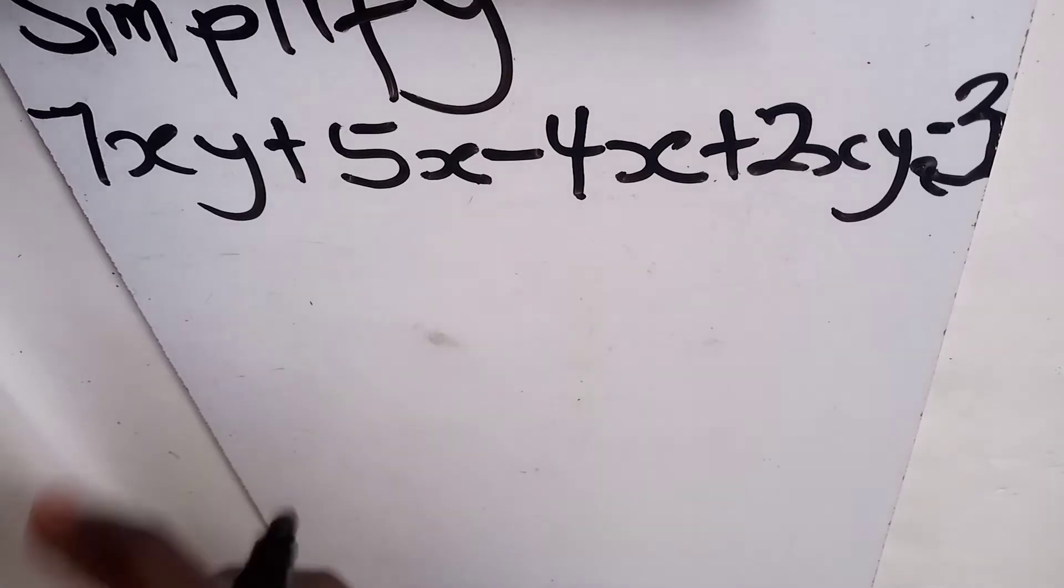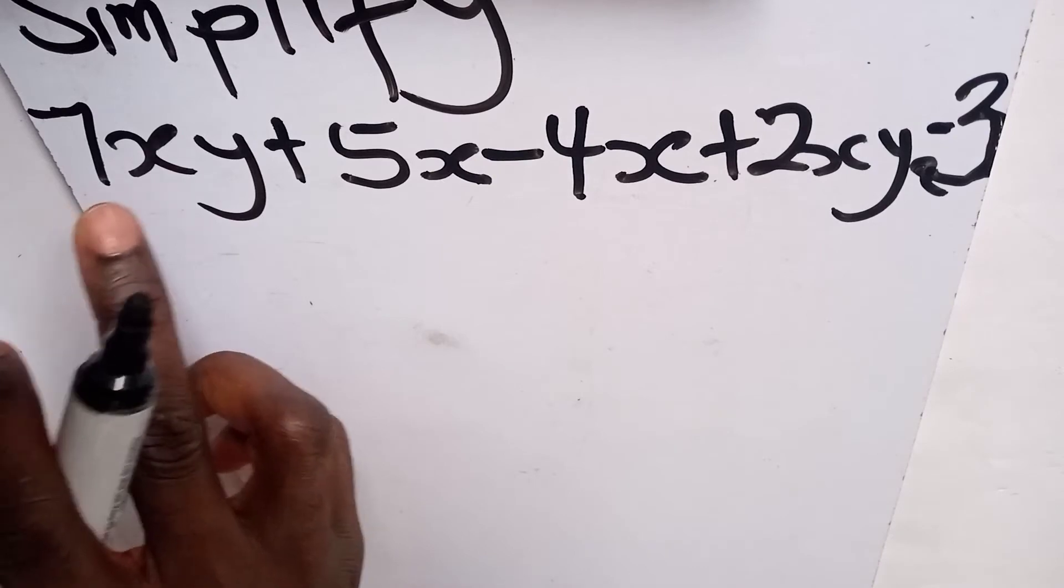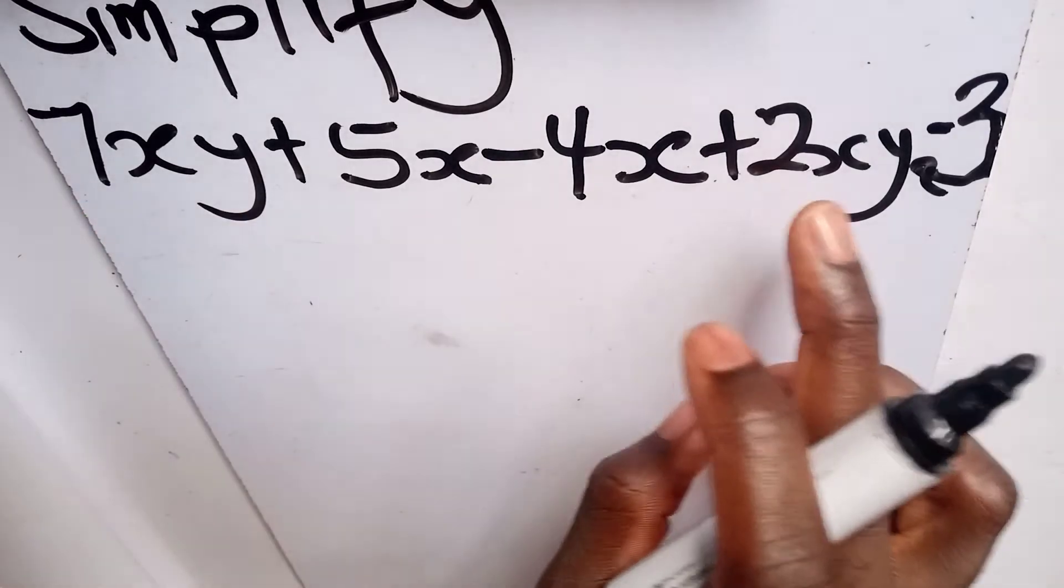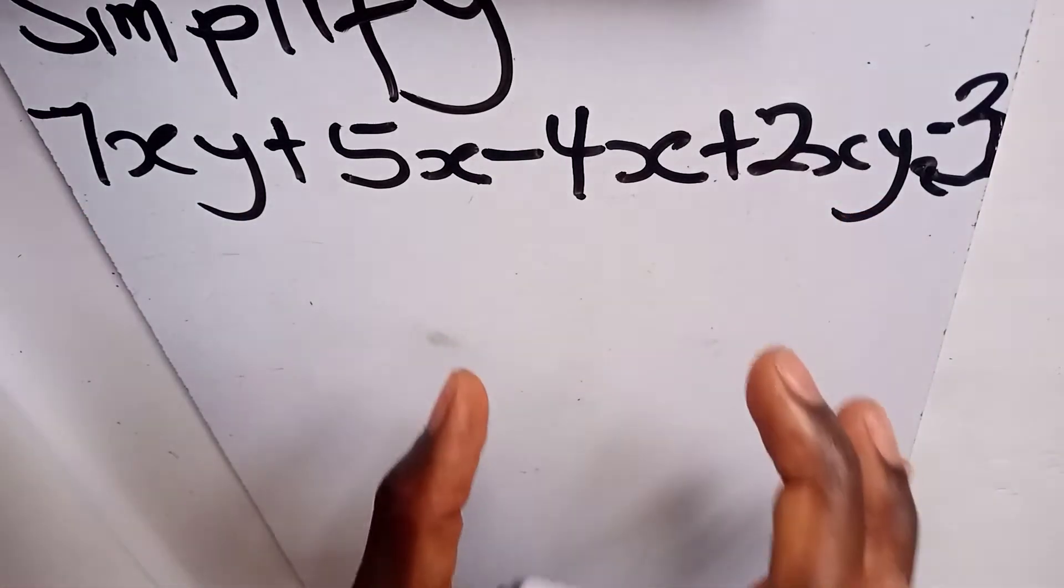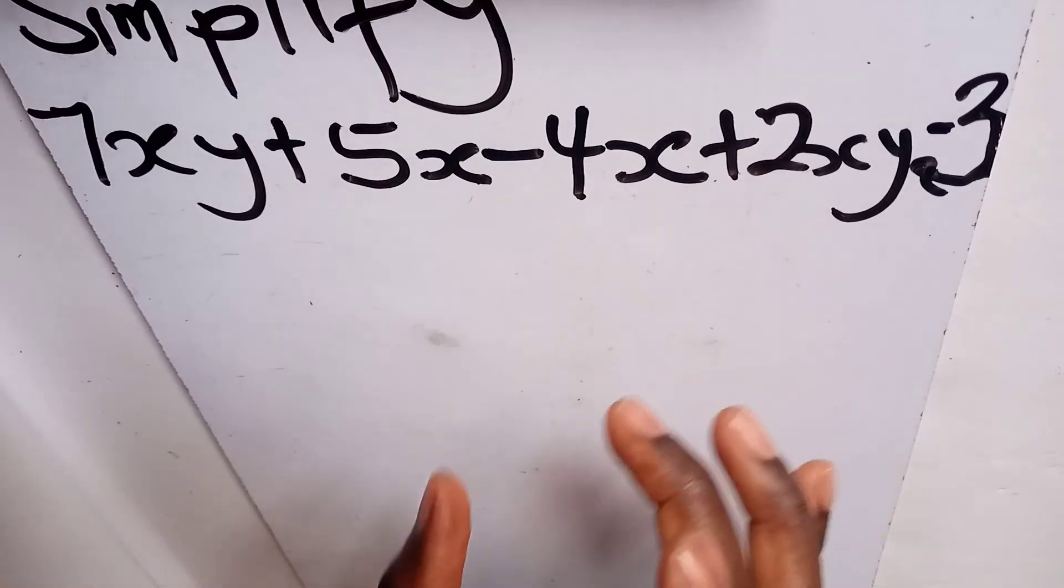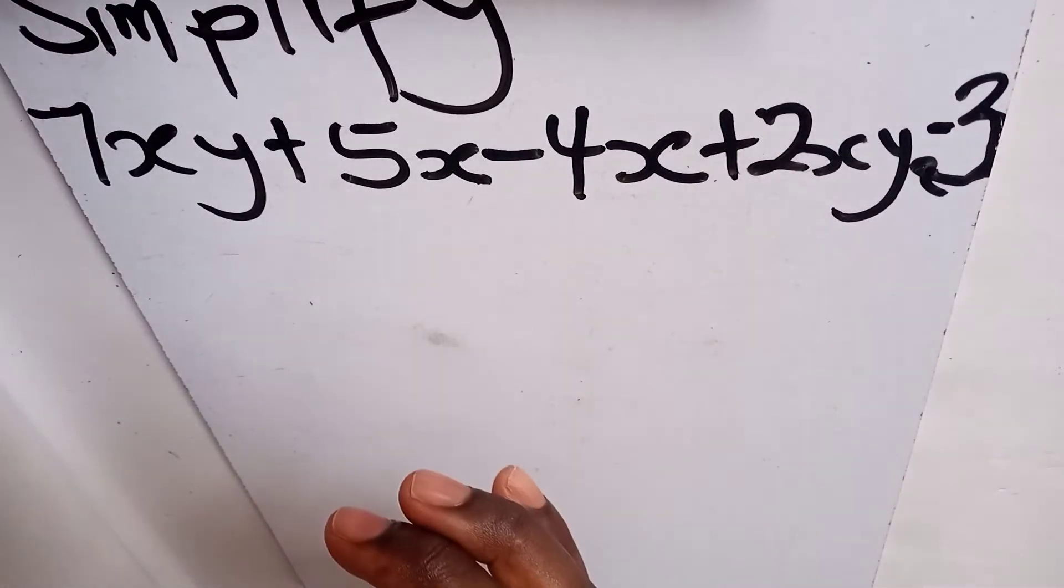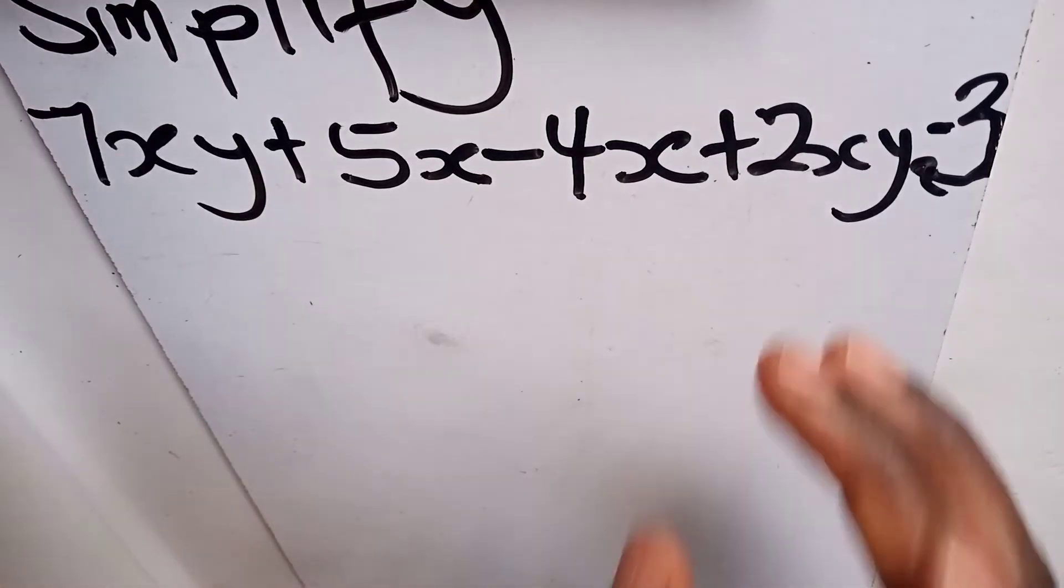So here, the like terms are 7xy and 2xy, they are alike. They are having the same variables, which is xy and then xy.